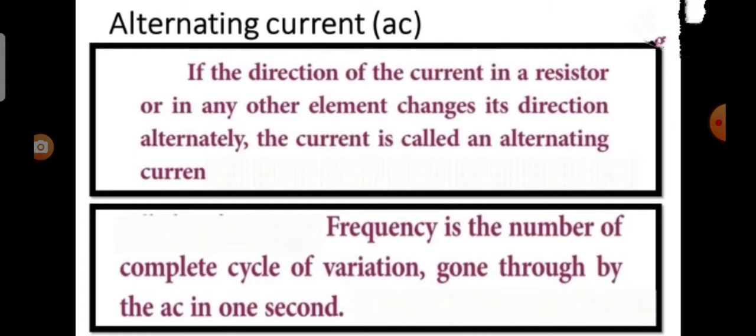If the direction of the current in a resistor or in any other element changes its direction alternately, the current is called an alternating current. The alternating current varies sinusoidally with time. This variation is characterized by the term called frequency.